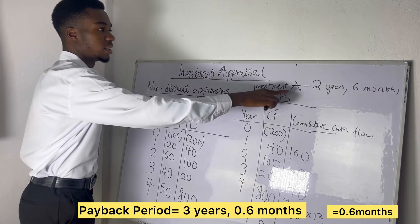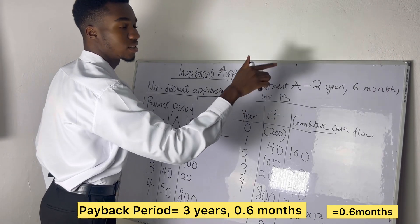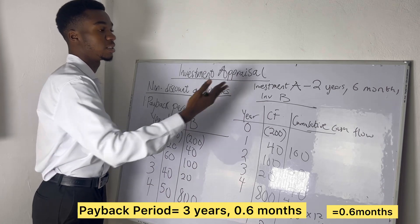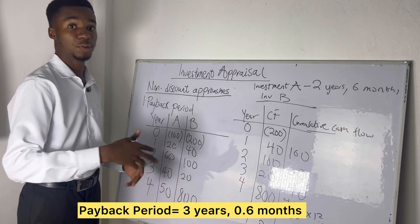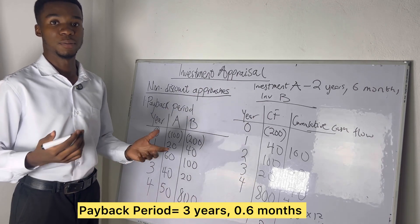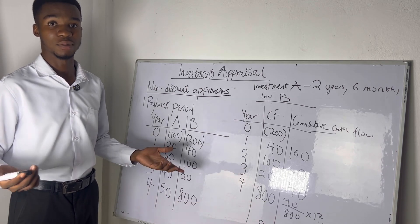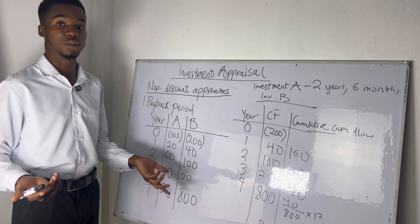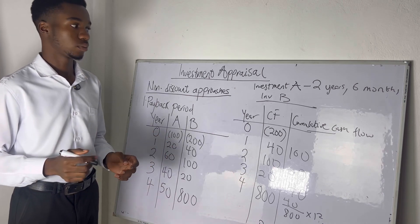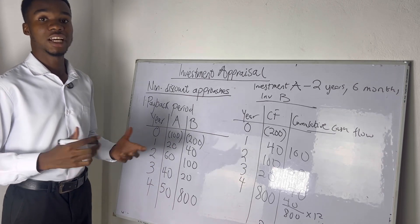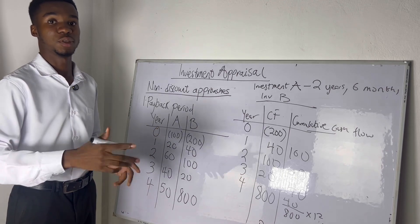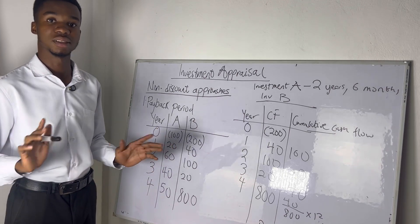Investment A's payback period is 2 years 6 months, and Investment B's is 3 years 0.6 months. Based on the payback period, you should accept Investment A because its payback period is shorter. The investment that gives you the shorter time to recover your money is the one you accept — that's basically it about the payback period.